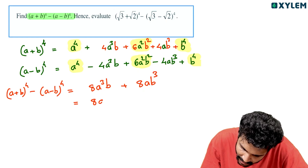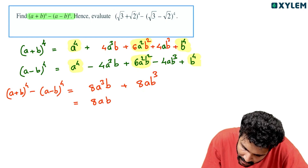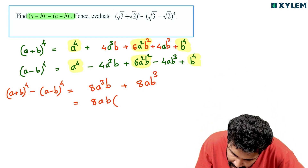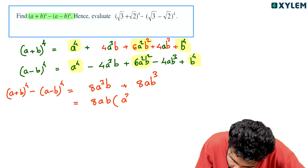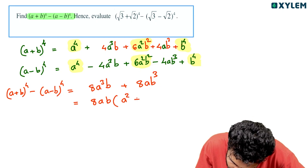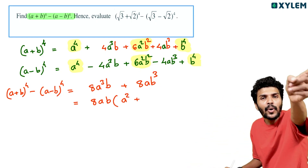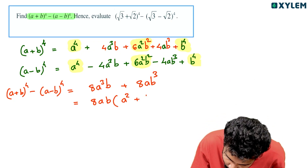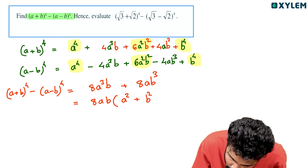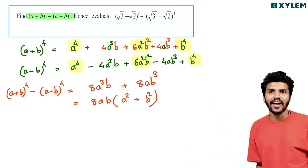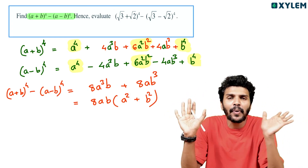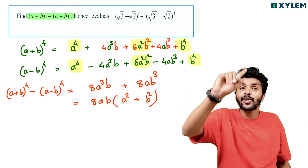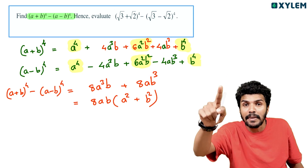Taking 8ab common: a squared and b squared. So 8ab into a squared gives 8a cubed b, and 8ab into b squared gives 8ab cubed. The result is 8ab times (a squared plus b squared).